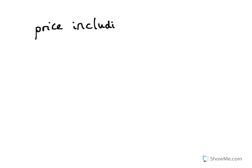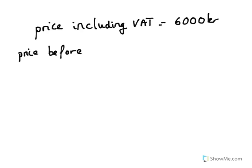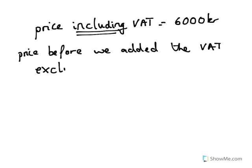So how do we work out the price if we already know the price including VAT? How do we find what the price was before VAT? Let's say that the price including VAT is 6,000 kronos. What is the price excluding VAT?